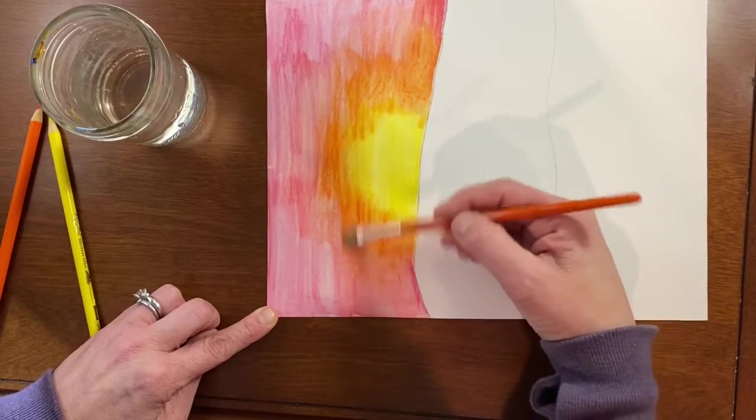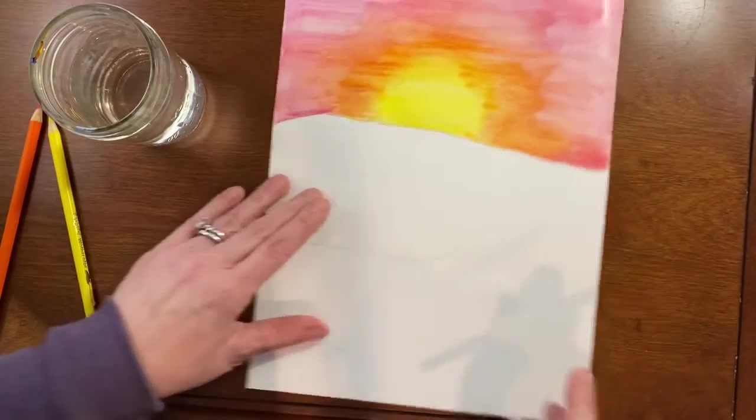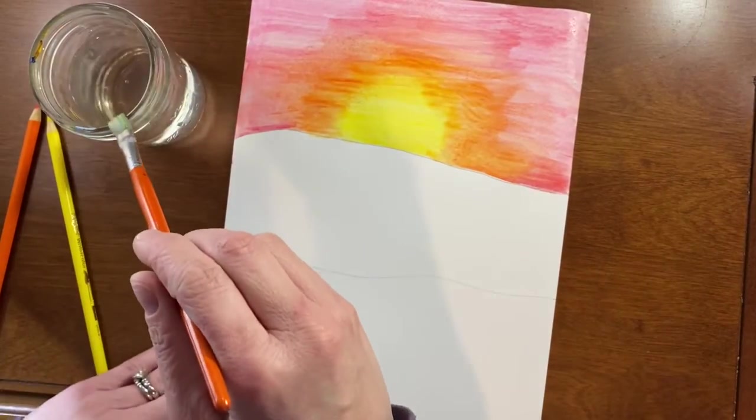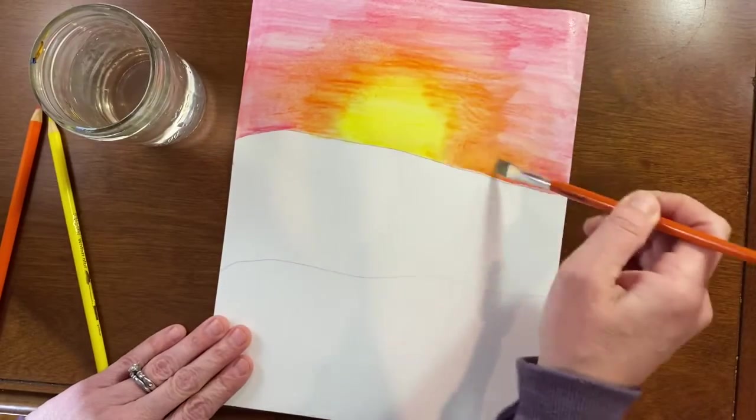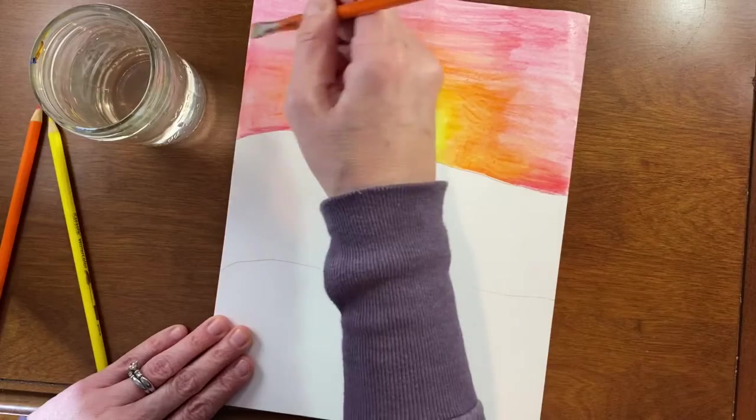So I'm blending this orange and yellow and into the red, just so that it looks more like a sunset. So as you go along, if you don't like something or you want more color, you could always add it after it dries. So I'm gonna stop here and go to the next step.